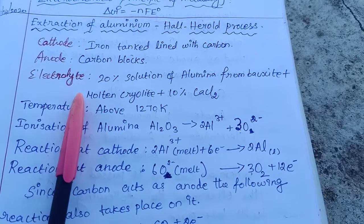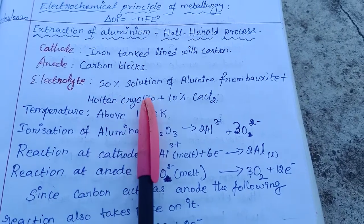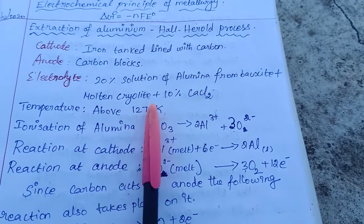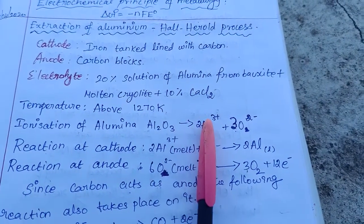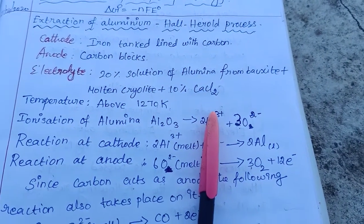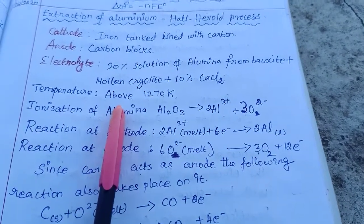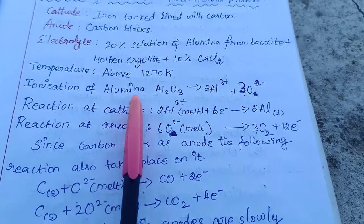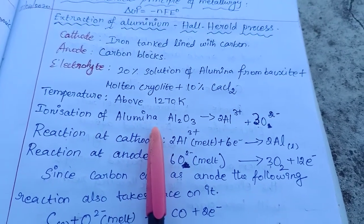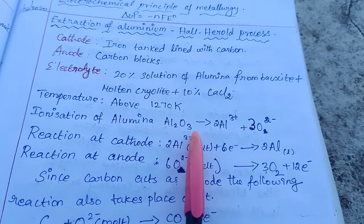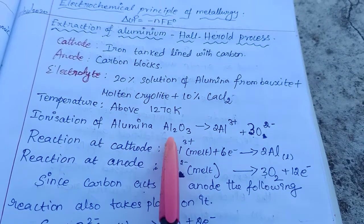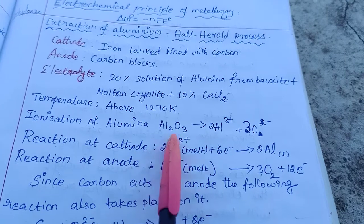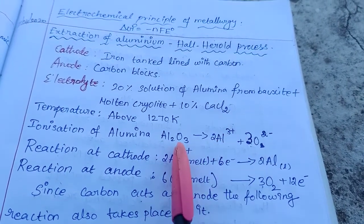The electrolyte is a 20% solution of aluminum from bauxite plus molten cryolite plus 10% calcium chloride. The temperature condition is above 1270 Kelvin. Ionization of alumina Al₂O₃ produces Al³⁺ ions, so 2 aluminum ions each with 3+ charge give 2Al³⁺ and 3O²⁻.